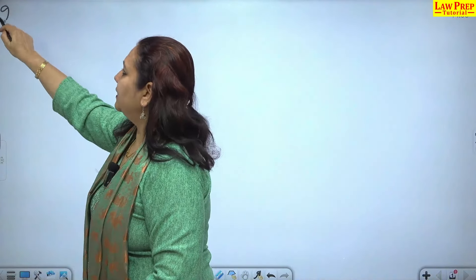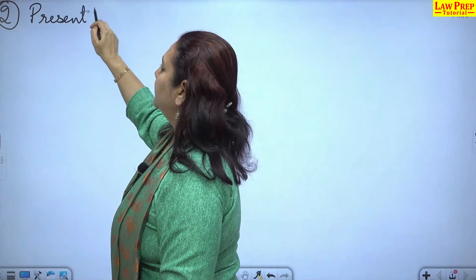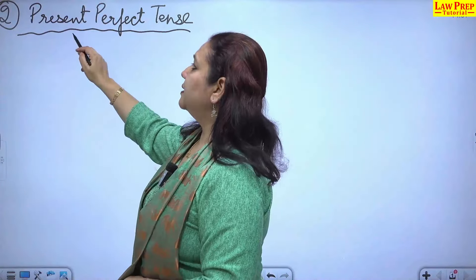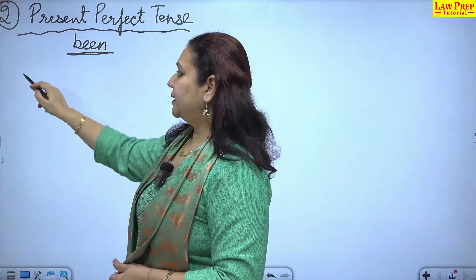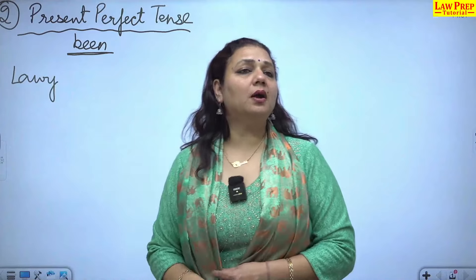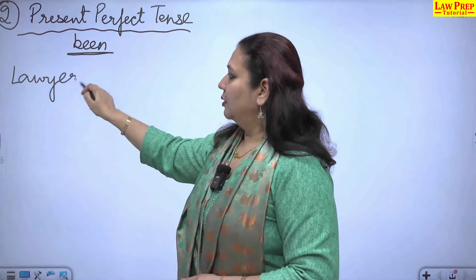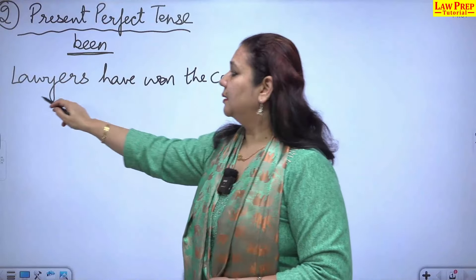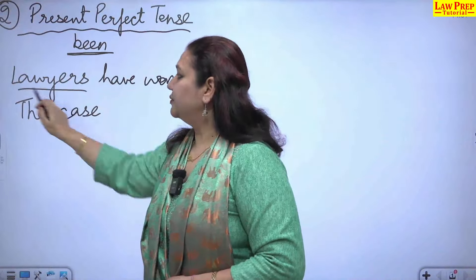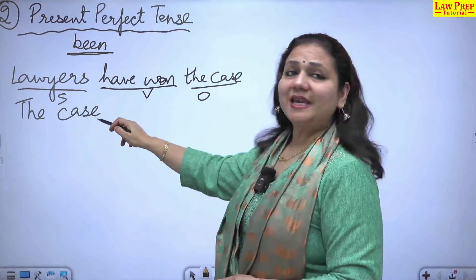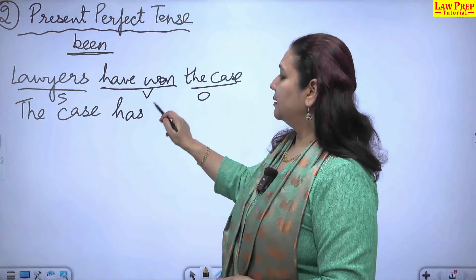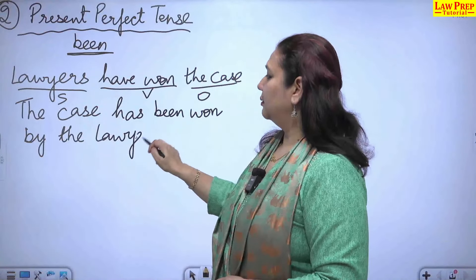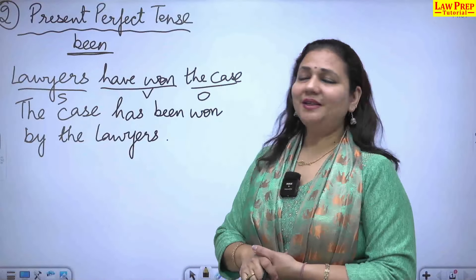Moving on to the second tense, that is present perfect tense. In present perfect tense, the helping verb 'been' is used. Taking the same sentence — 'lawyers have won the case' — we change it to 'the case has been won by the lawyers.' Since 'case' is singular, we use 'has.'